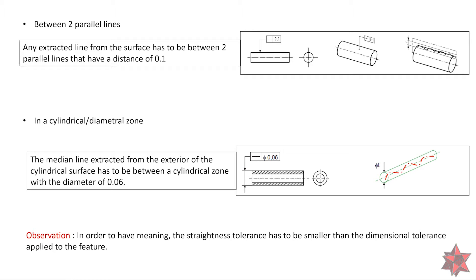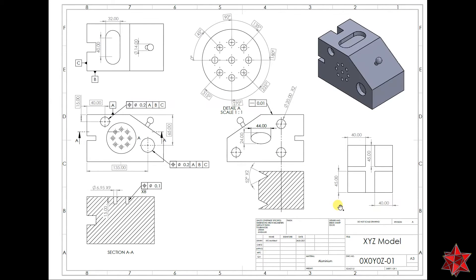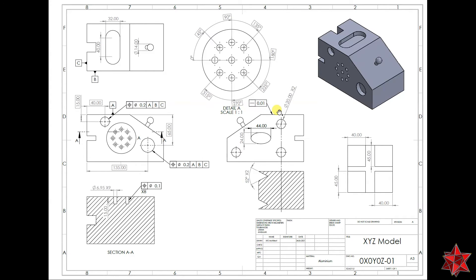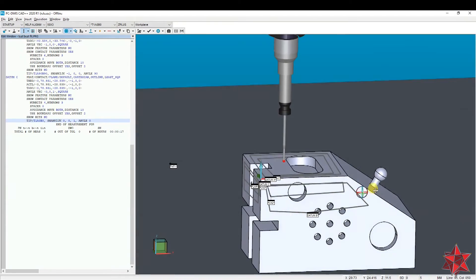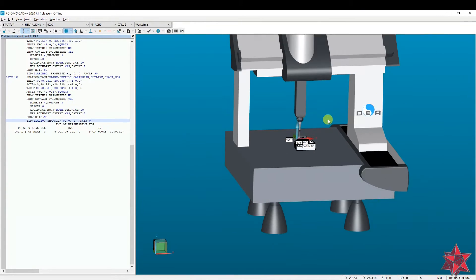I made some examples on PCD-Miss and on GOM, so let's go and see them. We have here the drawing of the XYZ model, and as we can see, on the surface from datum A we have a straightness requirement of 0.01. In order to evaluate the straightness on PCD-Miss, I've imported the CAT model of the XYZ model that I created.